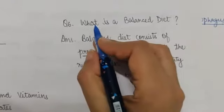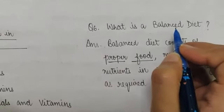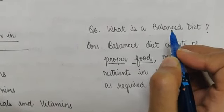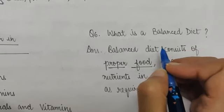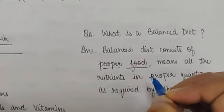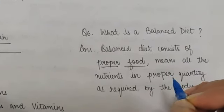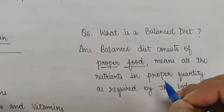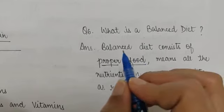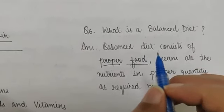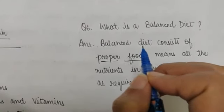Question number six. What is a balanced diet? You should know that we should eat proper food. Proper food means we should take a balanced diet. Balanced diet means we should take all nutrients required by our body. If we want to eat proper food, we should take a balanced diet.